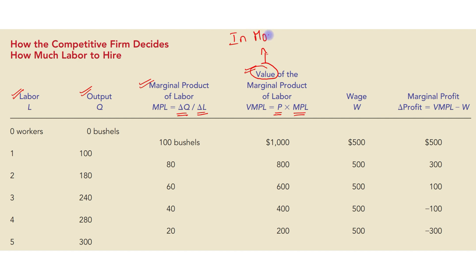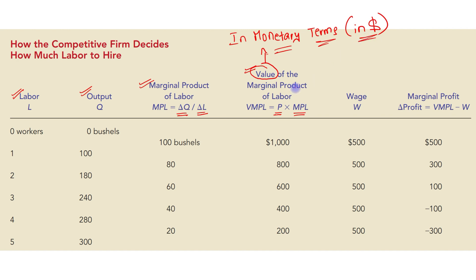In dollar terms — the marginal product of labor tells us the increase in output due to an additional unit of labor. If we want to find the value of that labor's efforts, value means in monetary terms, in dollar terms — how much revenue did that labor generate.